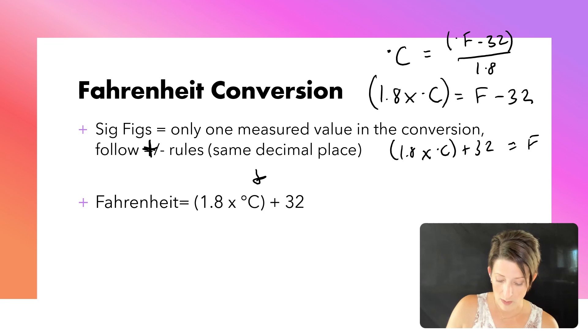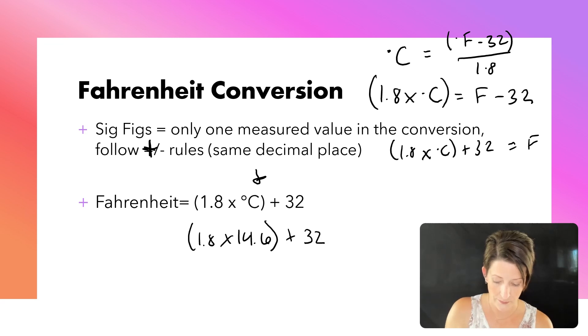So let's say we measured our degrees Celsius as 14.6. What is that in Fahrenheit? I'm going to take 1.8 times 14.6 plus 32. We're going to get 58.28 in our calculator. However, the precision of our thermometer is to the tenths place. Therefore, the precision of our answer needs to be to the tenths place. The 8 does cause the 2 to round up. Therefore, our final answer is 58.3 degrees Fahrenheit.